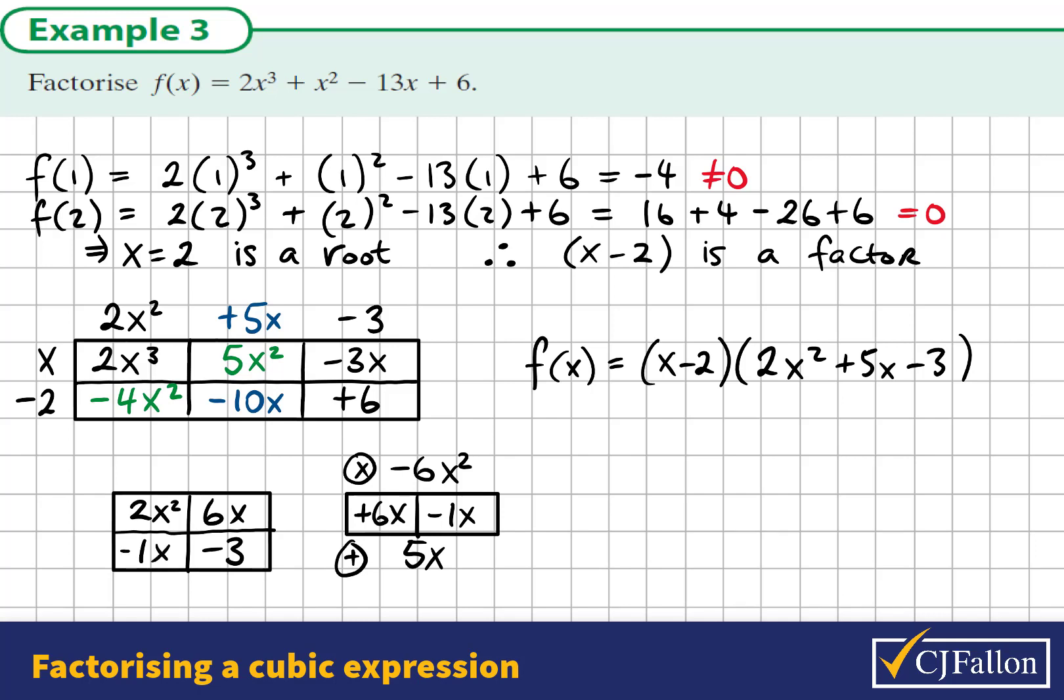I get a common factor along the top line, which is 2x. 2x by x is 2x squared. 2x by plus 3 is 6x. And x divides into negative 1x, negative 1 times. And I see it works with the 3 as well.